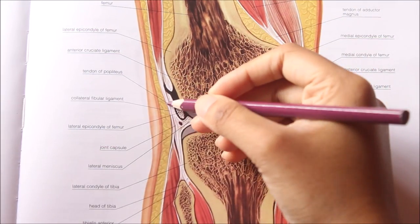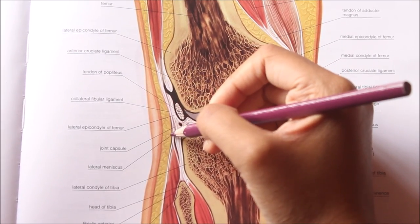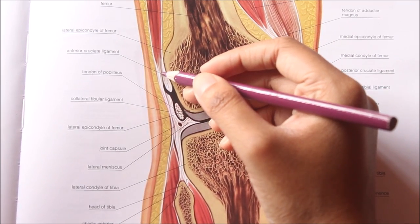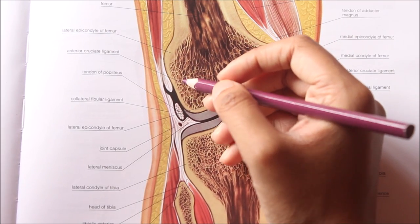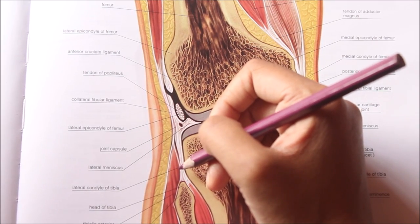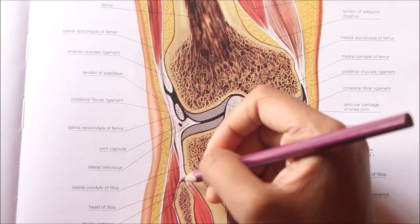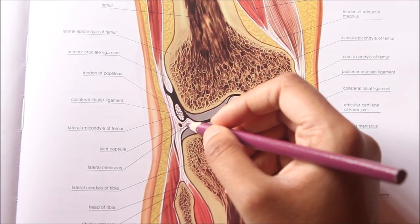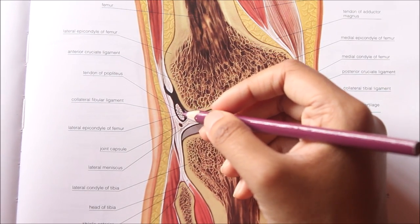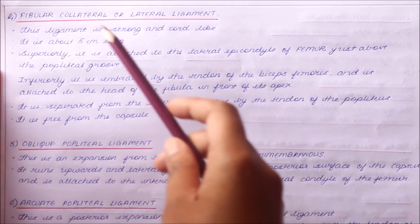The fibular collateral ligament is strong and cord-like, about 5 centimeters long. Superiorly it is attached to the lateral epicondyle of the femur just above the popliteal groove. Inferiorly it is embraced by the tendon of the biceps femoris and is attached to the head of the fibula in front of its apex. It is separated from the lateral meniscus by the tendon of the popliteus, and it is free from the capsule.